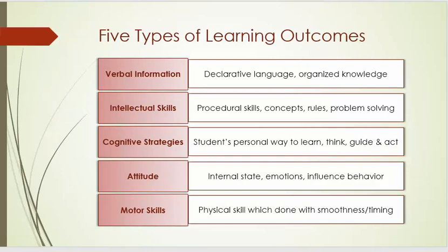Gagné believed there were five types of learning outcomes. Verbal information, which was declarative language and organized knowledge. Intellectual skills: procedural skills, concepts, rules, and problem solving.